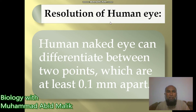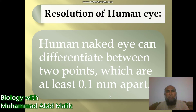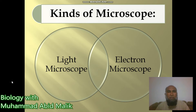Regarding the resolution of the human eye, the human naked eye can differentiate between two points that are at least 0.1 mm apart. That is the minimum distance at which the human eye can differentiate, which is essentially the resolving power of the human eye.